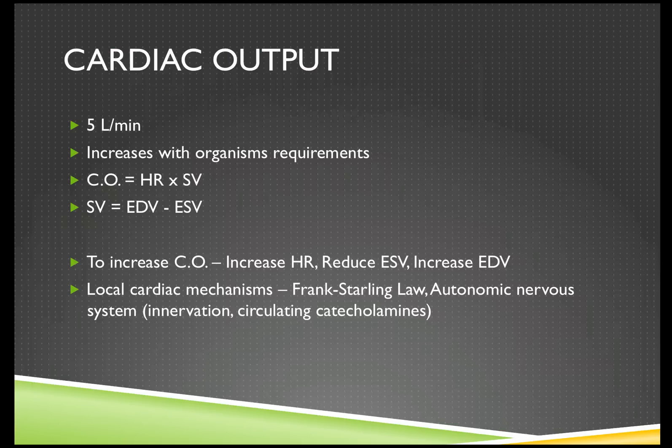Let's briefly touch on cardiac output and how cardiac output is measured. It's five liters per minute, and of course we increase our cardiac output commensurate with organ requirements. Cardiac output is calculated by the heart rate multiplied by the stroke volume, and the stroke volume relates to the end diastolic volume minus the end systolic volume. To increase our cardiac output during exercise, we need to increase our heart rate, we can reduce end systolic volume, and we can increase end diastolic volume.